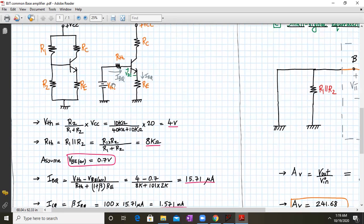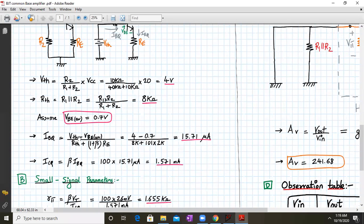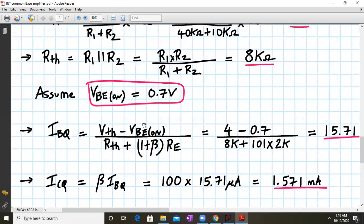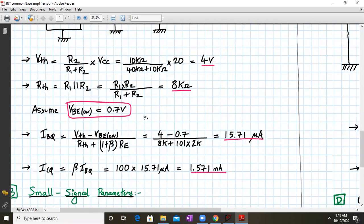We assume the value of VB on as 0.7 for the transistor. We applied the KVL at the input loop, which is VTH minus IB times RTH minus VB minus IEQ into RE where IEQ is one plus beta times IB. IBQ equals VTH minus VB on divided by RTH plus 1 plus beta times RE. Substituting the values, we get 15.71 micro amperes.